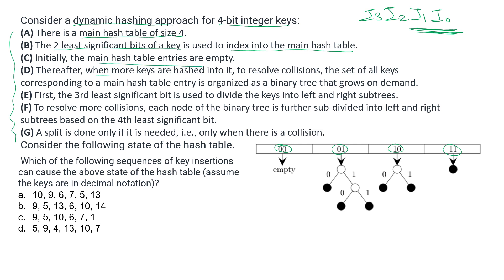Initially the table is empty. When more keys are hashed into it, collisions are resolved by organizing all keys corresponding to a main hash table entry as a binary tree that grows on demand. We are aware of a linked list approach where a hash table has limited space and when filled, chaining is used. Here, instead of a linked list, a binary tree is used in a similar but modified way.